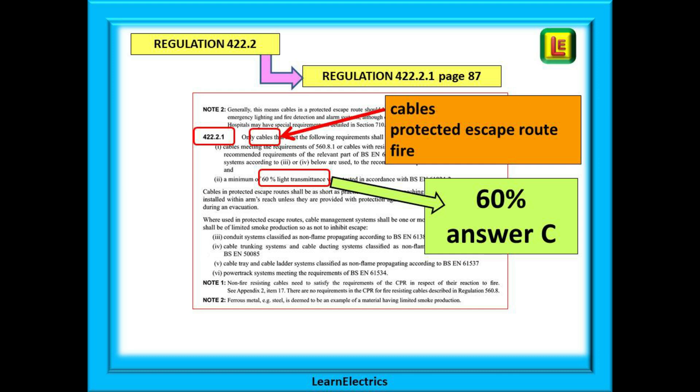Find regulation 422.2.1 on page 87 and there is your answer. Indent number 2 tells us it is a minimum of 60% light transmittance under certain test conditions. In the exam we would tick answer C.